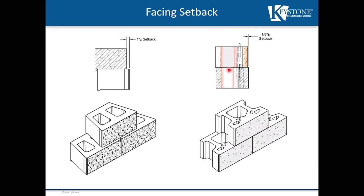Once we determine the block we're going to use, we want to determine what setback we're going to use. If we're doing a gravity wall, we strongly encourage people to use a one-inch setback compared to doing a near-vertical configuration. With the one-inch setback, the block is actually falling back into the soil it's trying to retain, thus giving it more strength in retaining that soil behind the retaining wall.